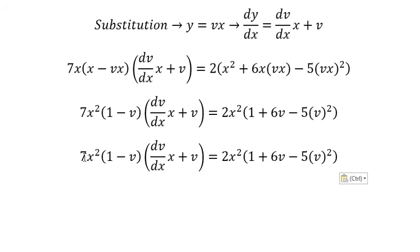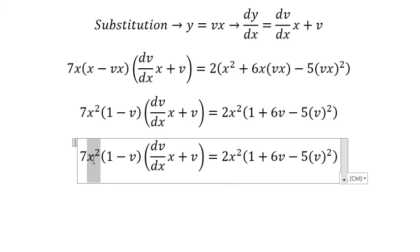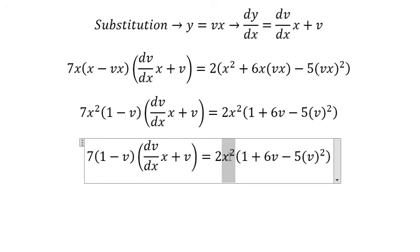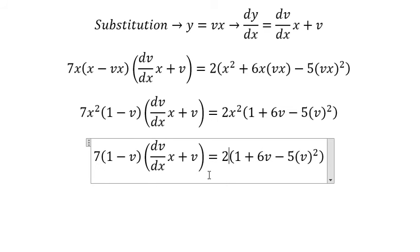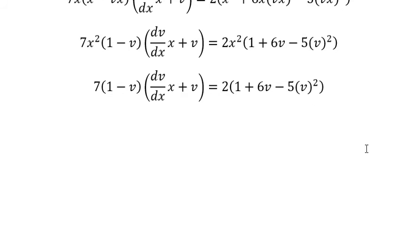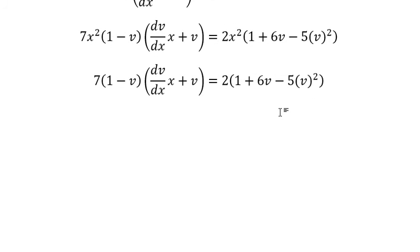We simplify this for both sides. Next, we divide both sides by 1 minus v.